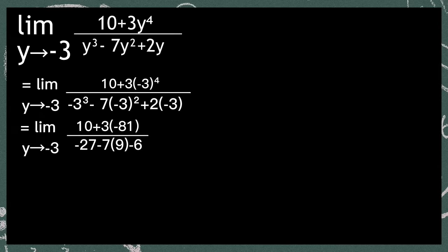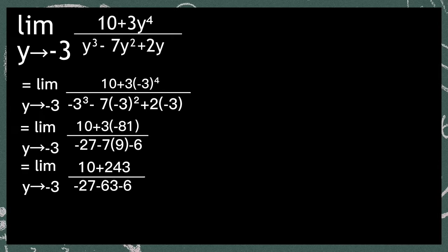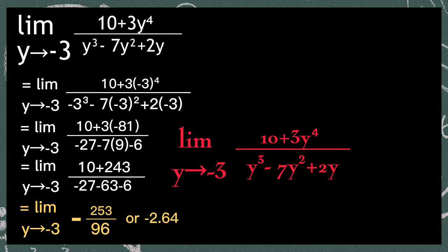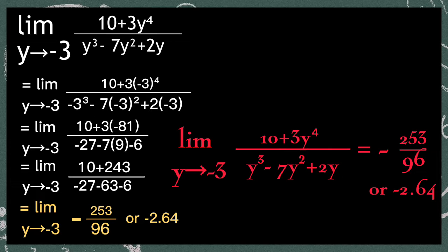And negative 3 raised to 3 is negative 27. And negative 3 raised to 2 is positive 9. And 2 times negative 3 is negative 6. So 3 times 81 is 243, and 7 times 9 is 63. So the limit of 10 plus 243 over negative 27 plus 63 minus 6 is equal to 253/96 or negative 2.64. So the limit of 10 plus 3y raised to 4, over y raised to 3 minus 7y raised to 2 plus 2y, as y approaches negative 3, is equal to 253/96 or negative 2.64.